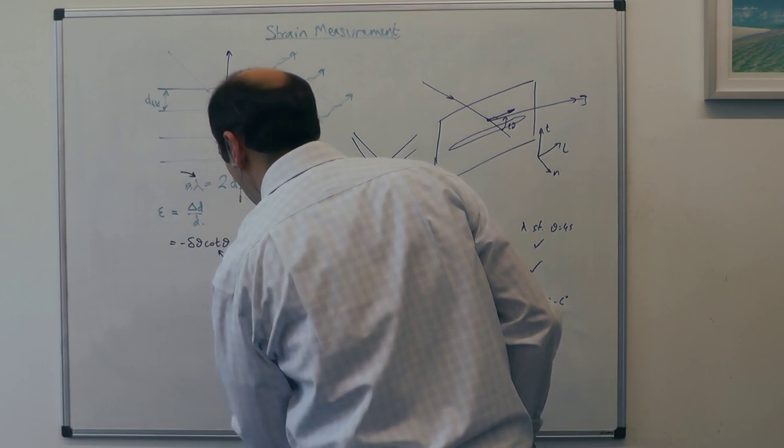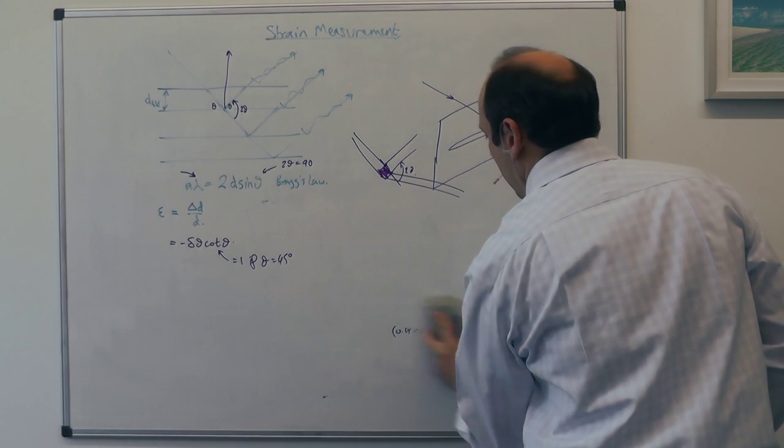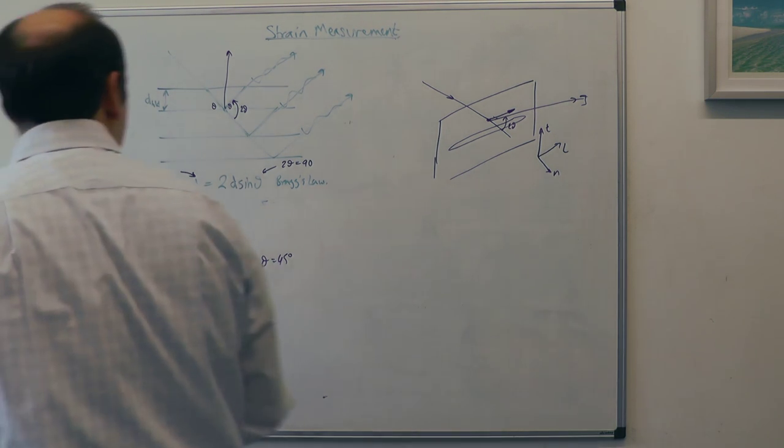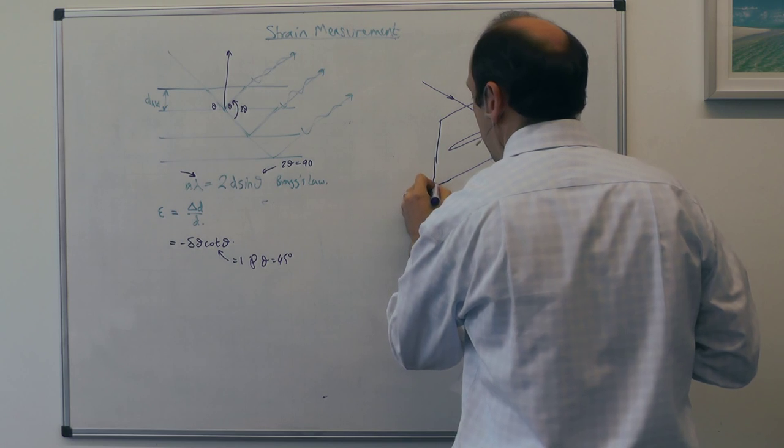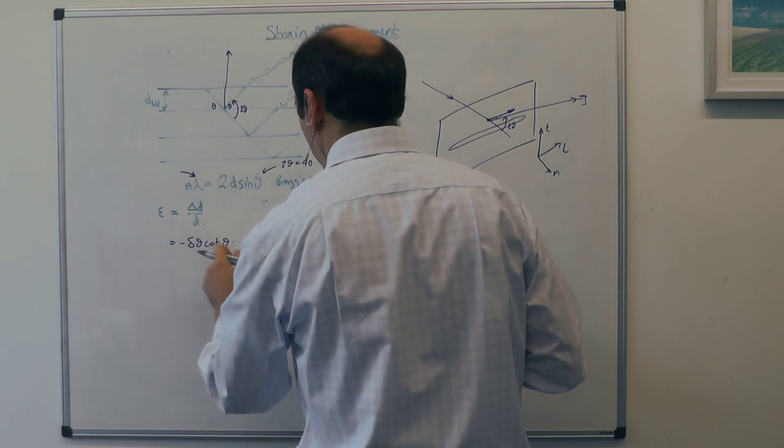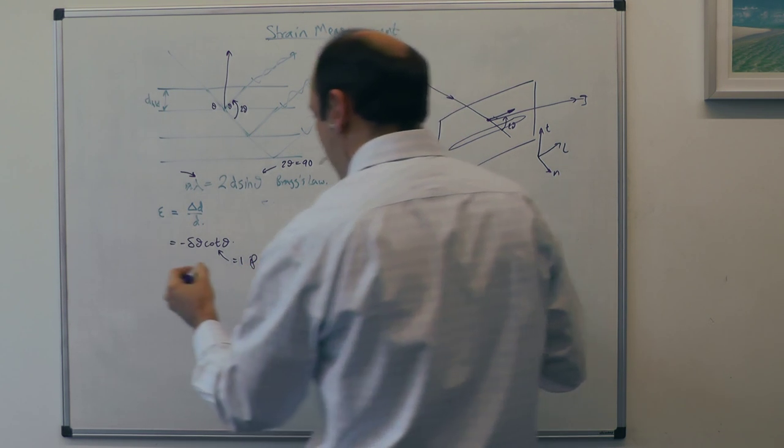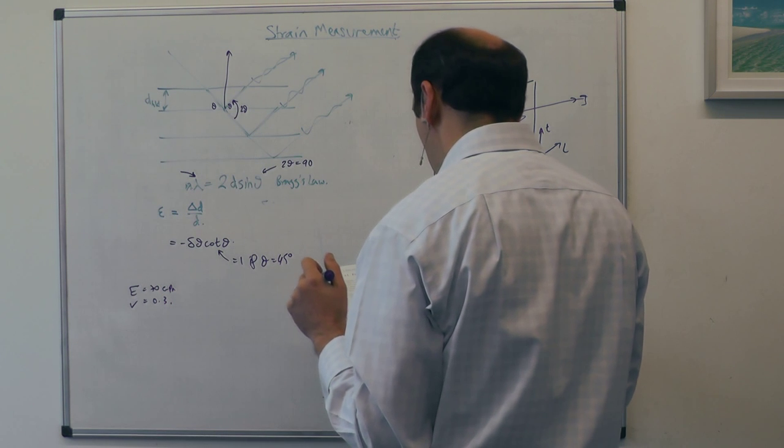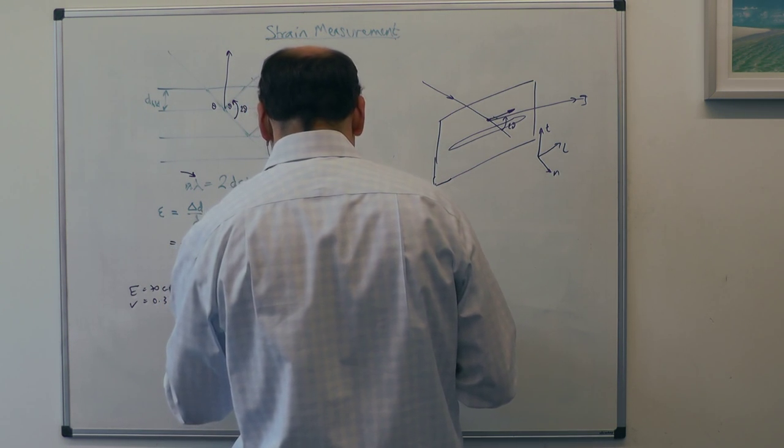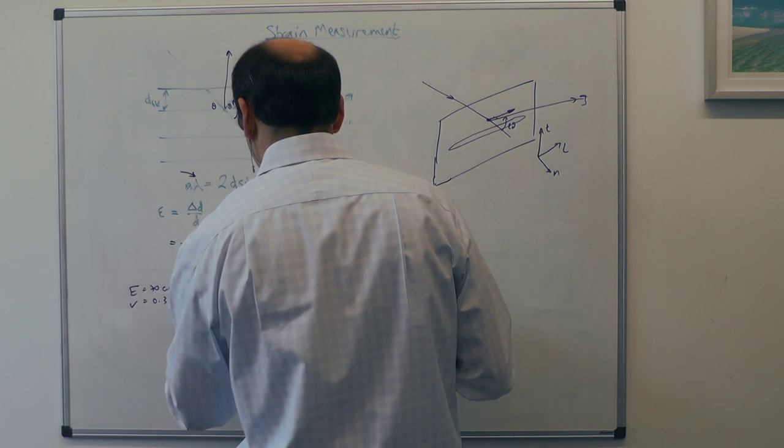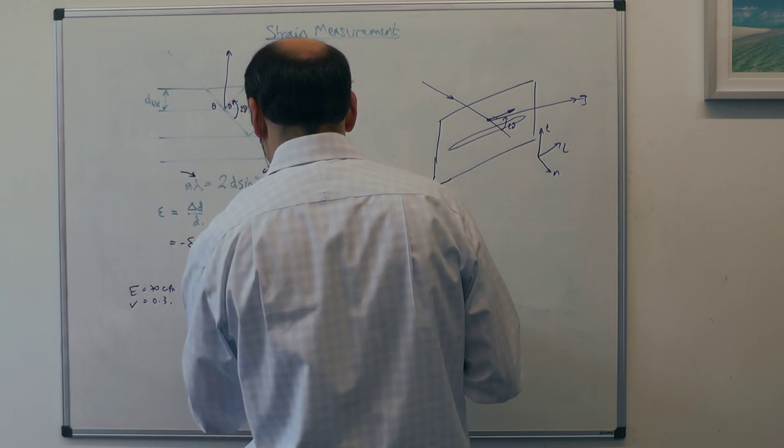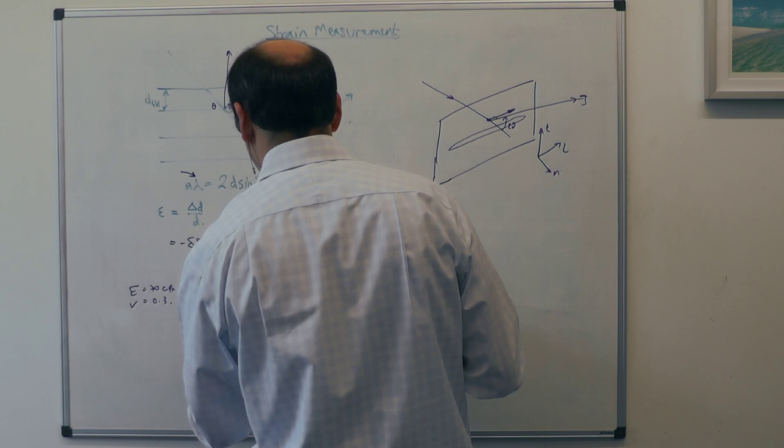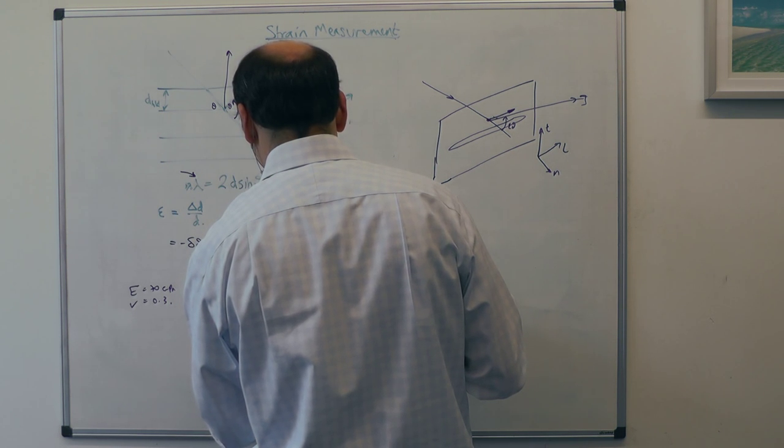So let's do an example of doing that for this welded plate here. And what we've got is we've got a situation where we've arranged for θ to be 45 degrees, so cot θ is equal to one. We've got aluminium with a modulus of 70 GPa, and a ν of 0.3. And we've got a diffraction angle where the change in diffraction angle, so partial θ, is equal to minus 0.12 degrees in the longitudinal direction, and partial θ in the transverse direction, is equal to minus 0.06 degrees.